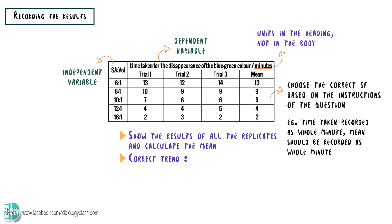The correct trend of this experiment should be: the greater the surface area to volume ratio, the shorter the time it takes for the color to disappear.